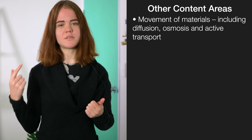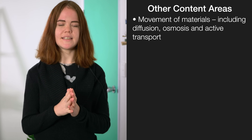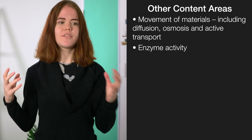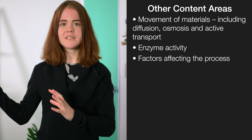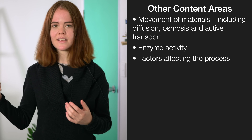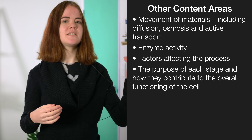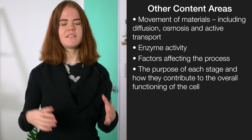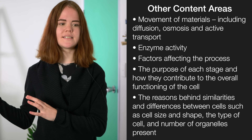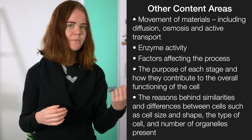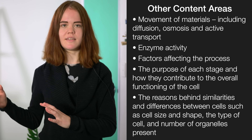As well as these three main processes, there are also five other areas that can be interwoven with them to form an NCEA question. These are: firstly, the movement of materials — diffusion, osmosis, active transport; secondly, enzyme activity; thirdly, factors affecting the life processes such as temperature, pH, and sunlight; fourthly, the purposes of each of these processes; and fifthly, the reasons for the similarities and differences between particular cells — for example, size and shape of cells or the number of organelles in them.